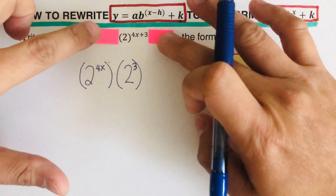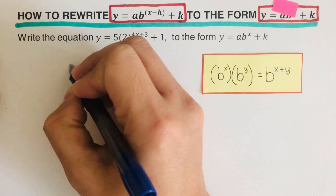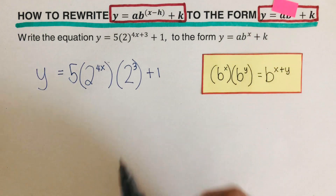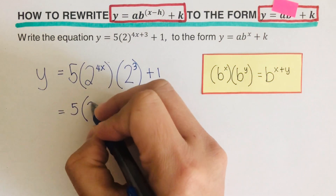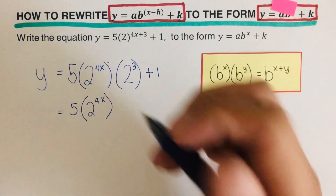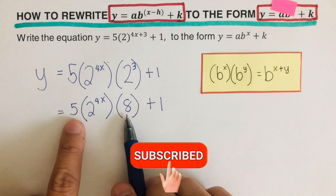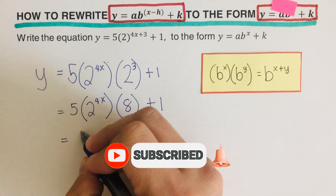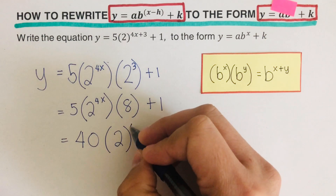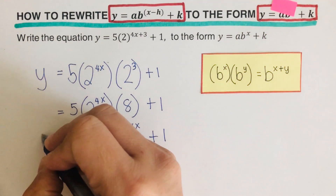Next, we add all the remaining parts: multiply by 5 and add the plus 1, giving us y. We can simplify further: 2 to the third power is 2 times 2 times 2 which equals 8, and 5 times 8 is 40. So we can write y equals 40 times 2 raised to the power 4x, plus 1.